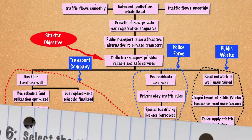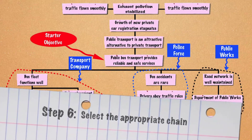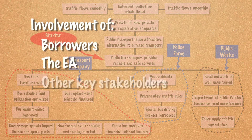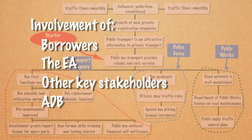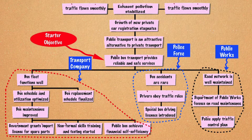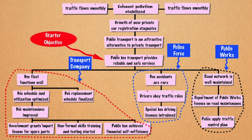Step 6: Select the appropriate chain. The collective involvement of the borrowers, the EA, other key stakeholders as appropriate, and ADB is critical in this step. The final decision should be based on a consensus to ensure ownership of the proposed project and maximize the probability of achieving desired results. If more detailed studies are anticipated, the selected chain may still change given the results of each study.